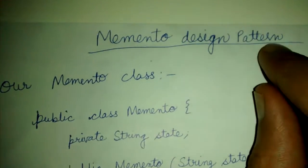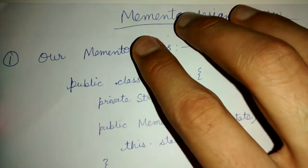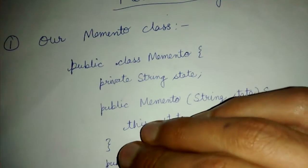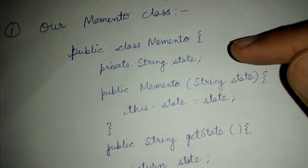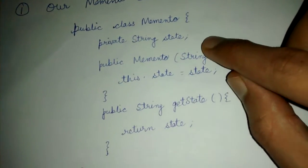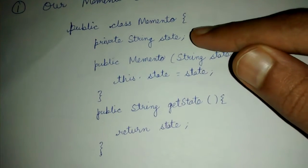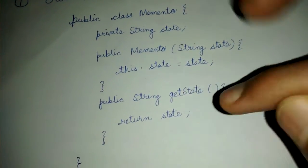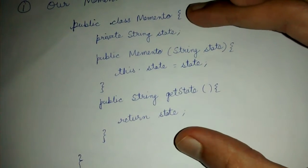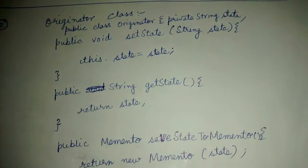Today we will be looking at the Memento design pattern. This design pattern is used to restore an object state to a previous state. A memento is an object used to store a state — it is a simple POJO-kind of class having a state, a simple constructor, and a get state method. That's all — it is used to encapsulate the state.